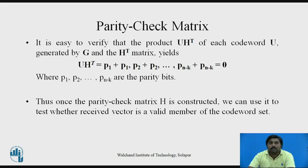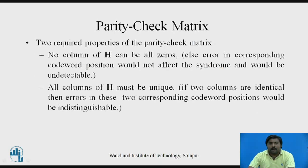Once the parity check matrix H is constructed, we can test whether a received vector is a valid member of the codeword set or not. There are two conditions for the parity check matrix. First, no column of H can be all zeros — if any column is all zeros, it will not affect the syndrome, so you won't be able to detect any error at the receiver side. Second, all columns of H must be unique — if two columns are identical, you'll get the same syndrome response and won't be able to distinguish which received codeword caused it.